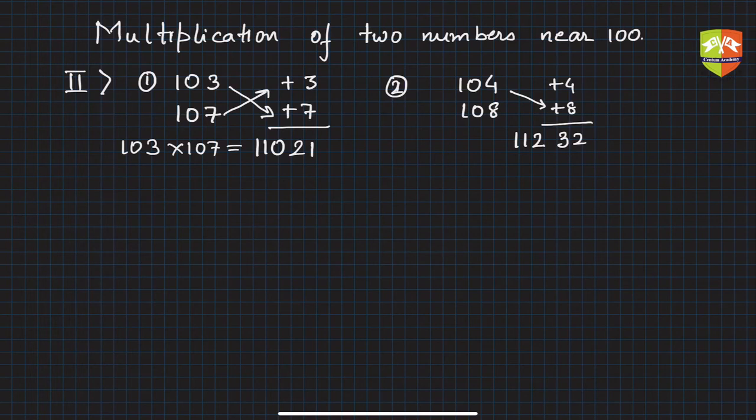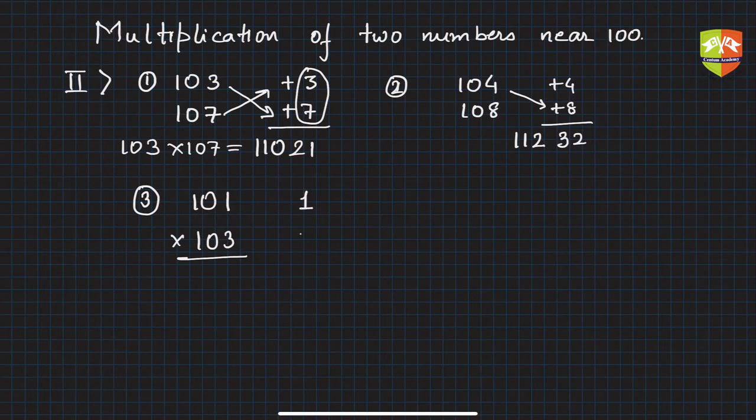Now let's take a case where the units place product is only a one-digit number. Such a case could be 101 times 103. What you need to check is how far from 100: plus 1 and plus 3.